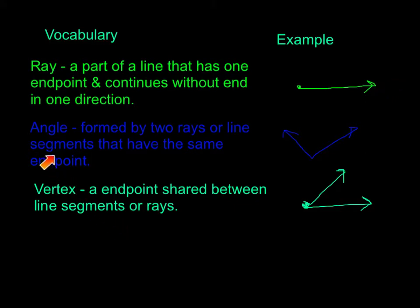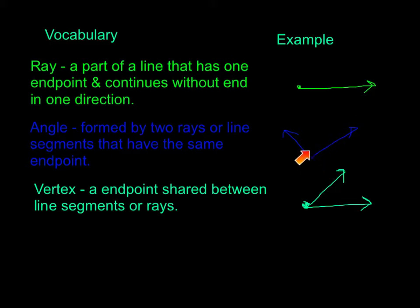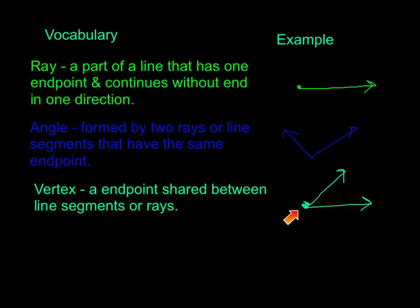The next vocabulary word is an angle. An angle is formed by two rays or line segments that have the same end point. We have our end point right here in the middle, and one ray continues out while another ray continues out in a different direction to form an angle. The vertex is the end point shared between two line segments or rays — the center point where the two rays join together.